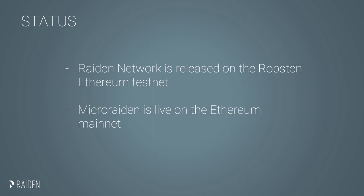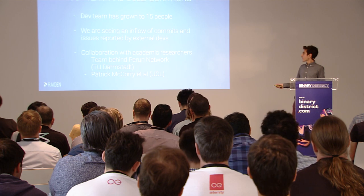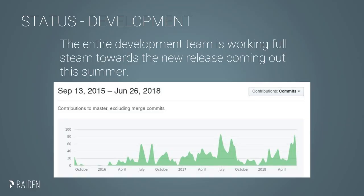Where are we now? We have a somewhat outdated version released on the Ropsten test network — it's operational and it works, people have already tested it. Micro Raiden is live on the Ethereum mainnet already. We have grown the development team to 15 people and are seeing many new commits from external developers. I want to thank Gitcoin for helping us with bounties, which attracted many new developers, some of whom stayed after the bounties were paid. We are also collaborating with academic researchers from TU Darmstadt, Parity Network, and Patrick Macquarie from UCL. We're working full steam toward our mainnet release scheduled for sometime this summer — you can see the commits are going to the moon.